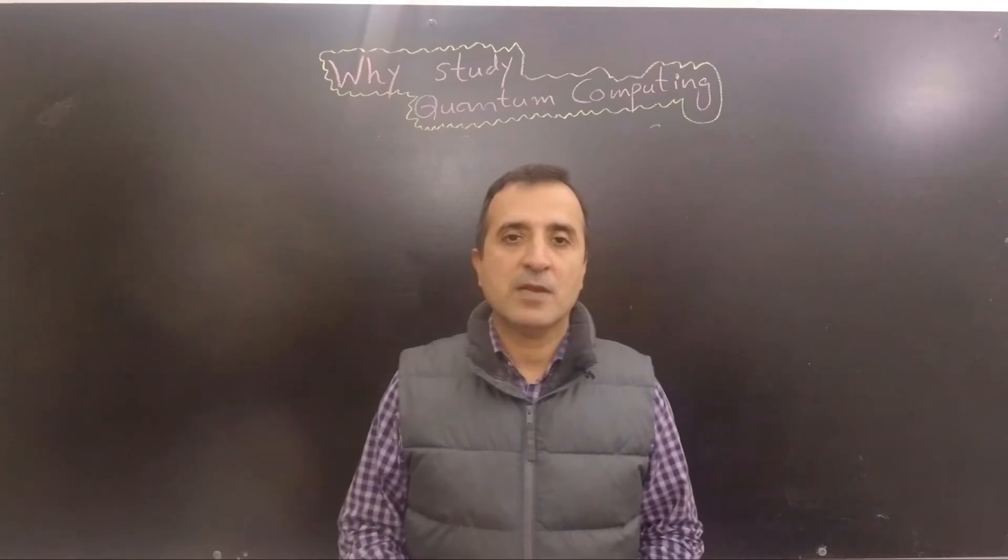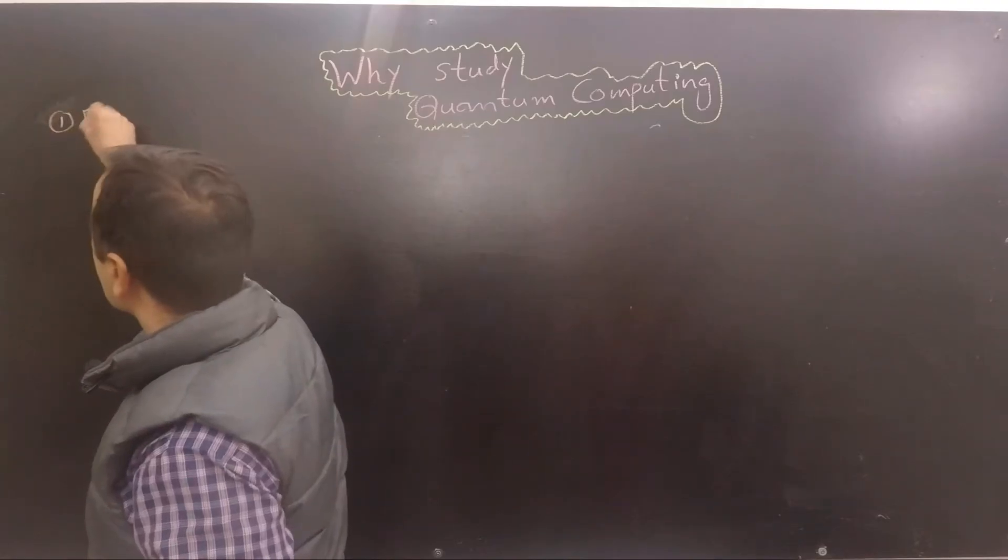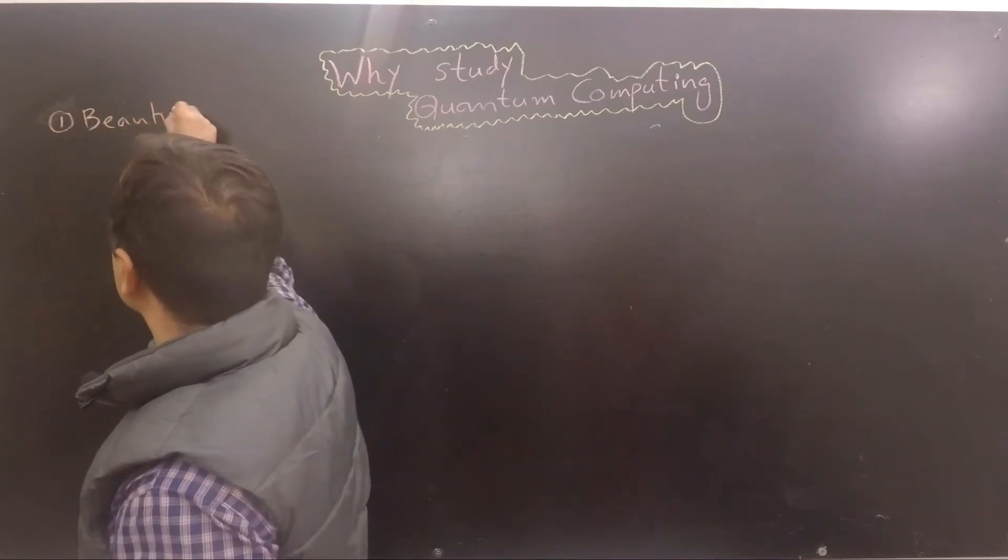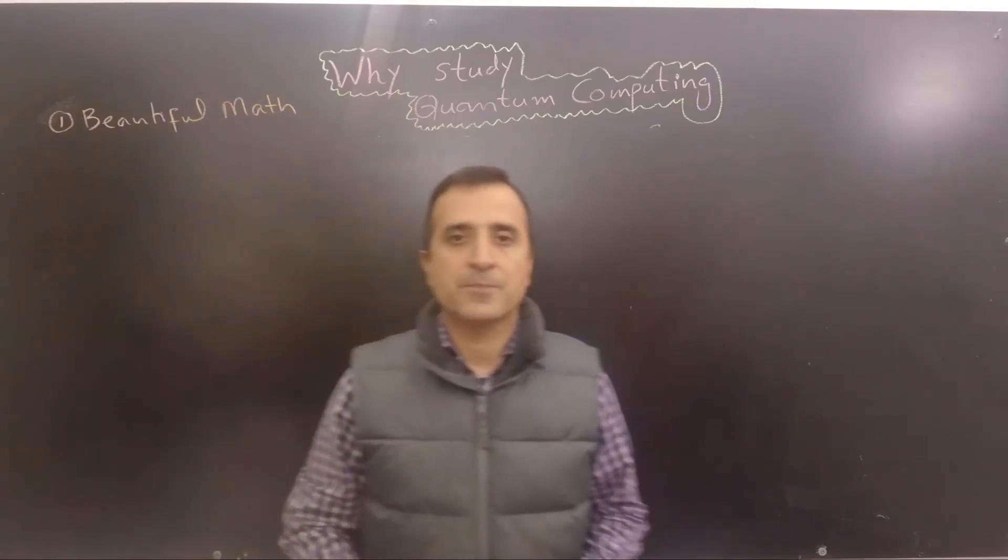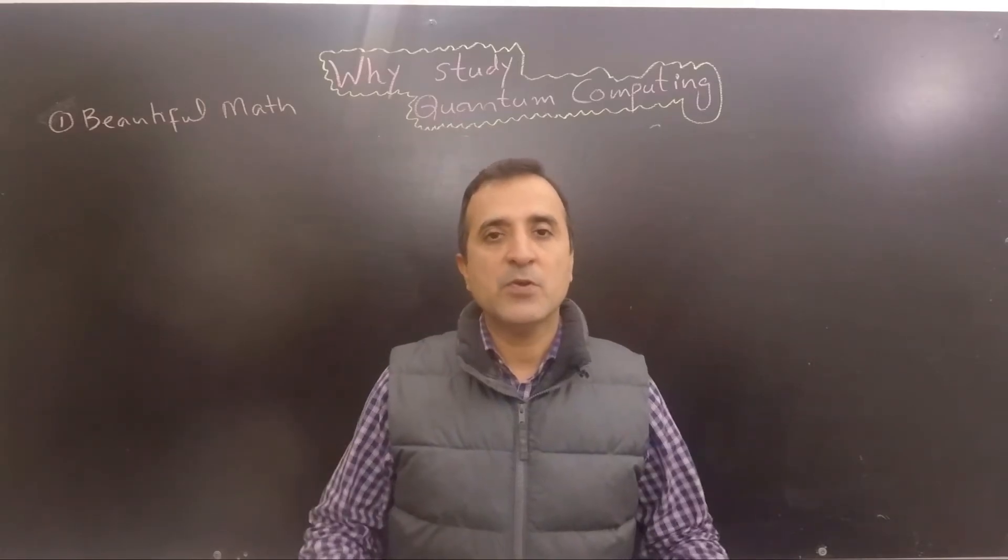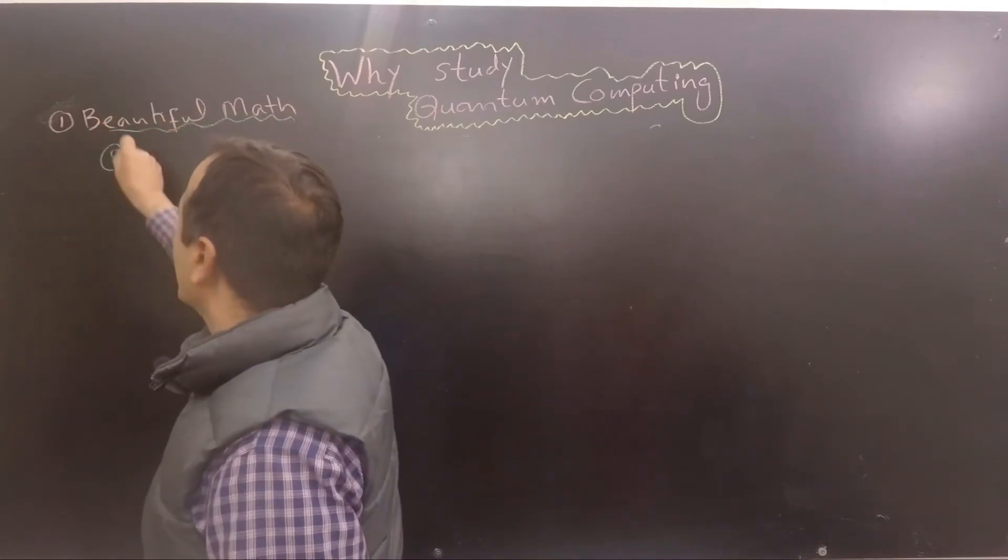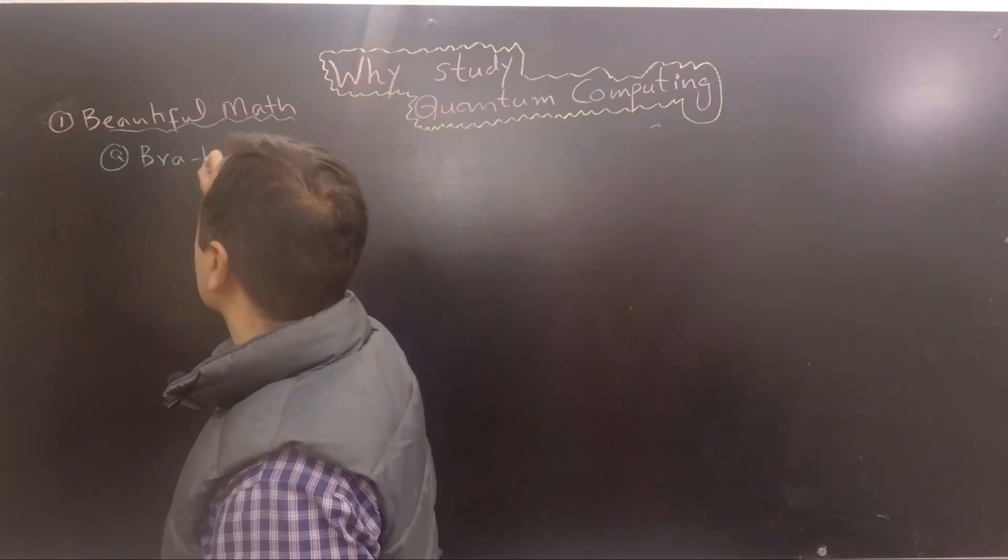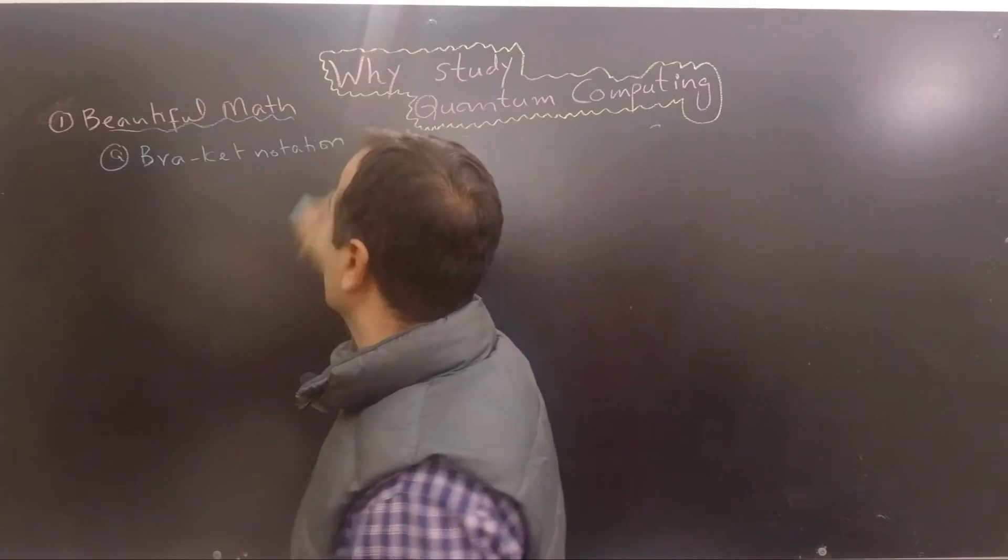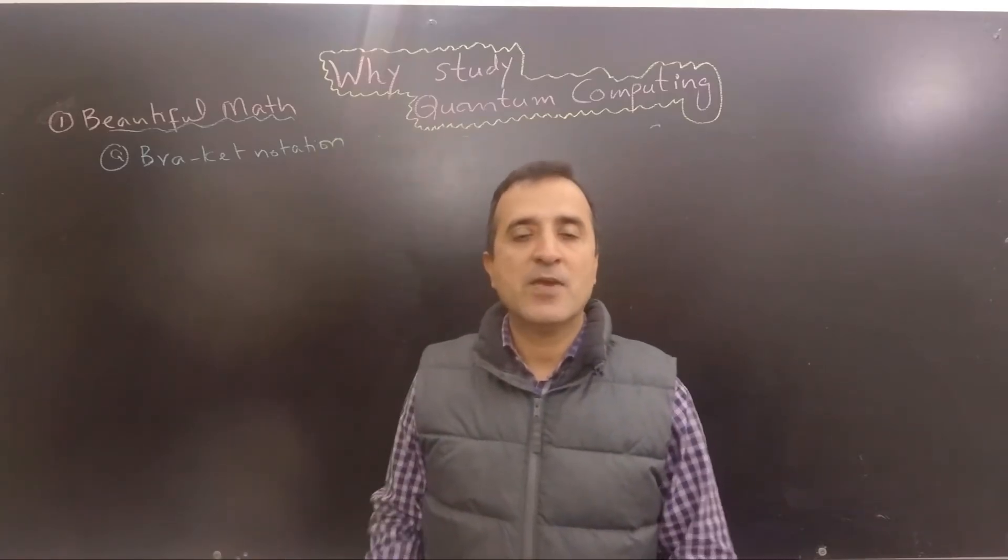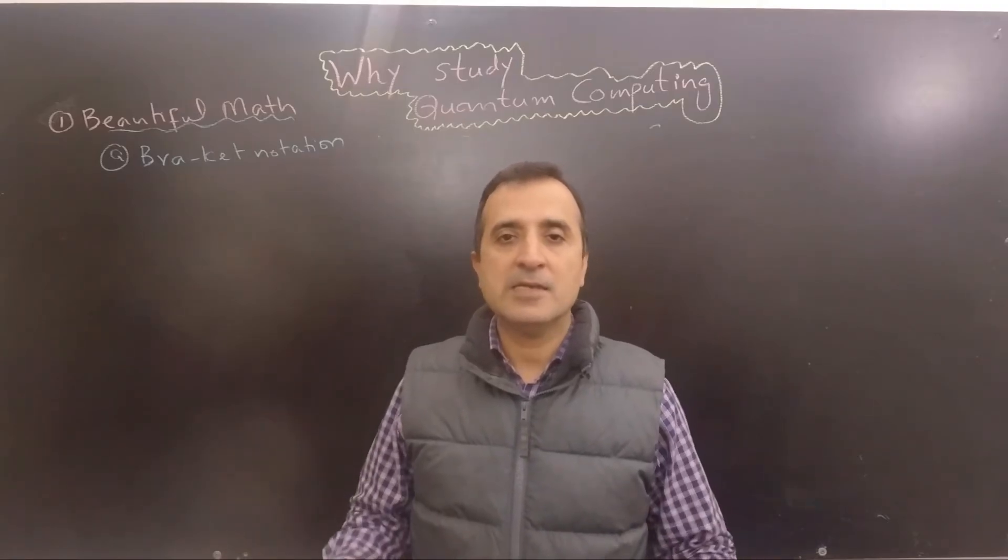For me, reason number one is beautiful mathematics. Math in quantum computing is beautiful in two different aspects. First, bra and ket notation. Bra and ket notation allow us to write very big vectors and matrices and operations on vectors and matrices in very precise and concise form.